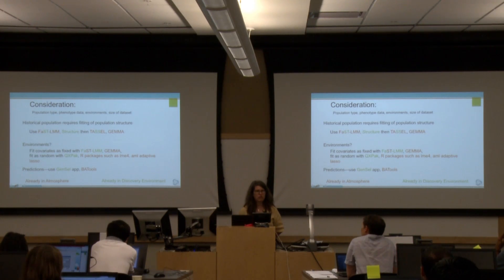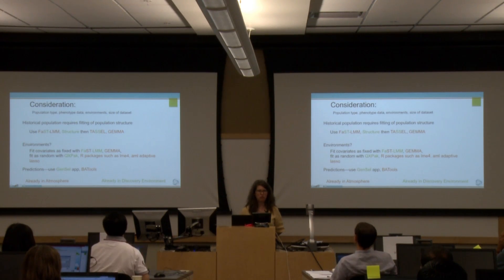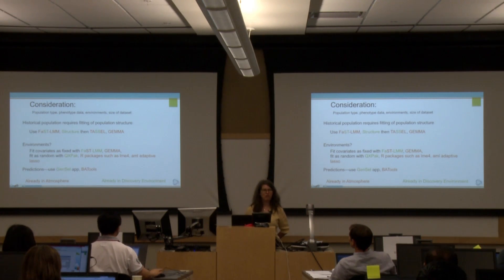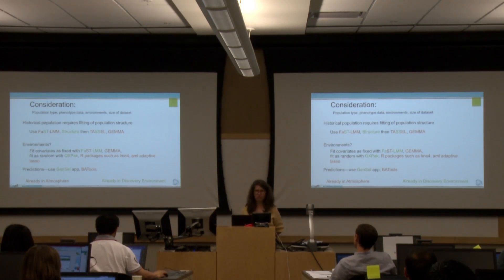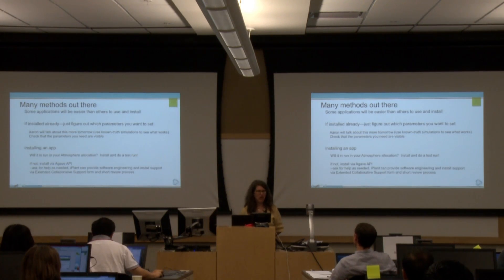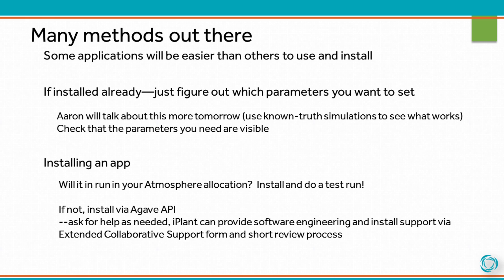BA tools is another choice — from the Templeman lab at Michigan State University. It's a way of handling correlation structures you get, specifically a Bayesian anti-dependence model with correlation structure, which is quite clever. The folks in the Templeman lab have installed that for us as an Atmosphere image. You can also install your own — we'll talk about that tomorrow — and figure out how to install the software you need in your Atmosphere image. There are a lot of methods out there, but if it's already installed, all you need to do is figure out what parameters you want to set, and that's where you need your biology knowledge and experience.